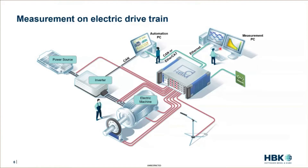The system can furthermore be connected to, for example, a measurement PC, which could be used to analyze data or also to set up the measurement settings. And of course, the measurement system could also be connected to an automation PC, which is a supervising control unit used to define set point values for the inverter control in order to drive to the next relevant operating point.